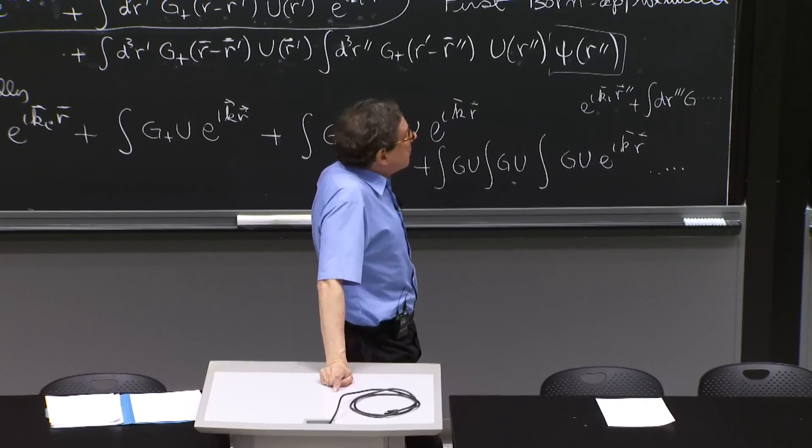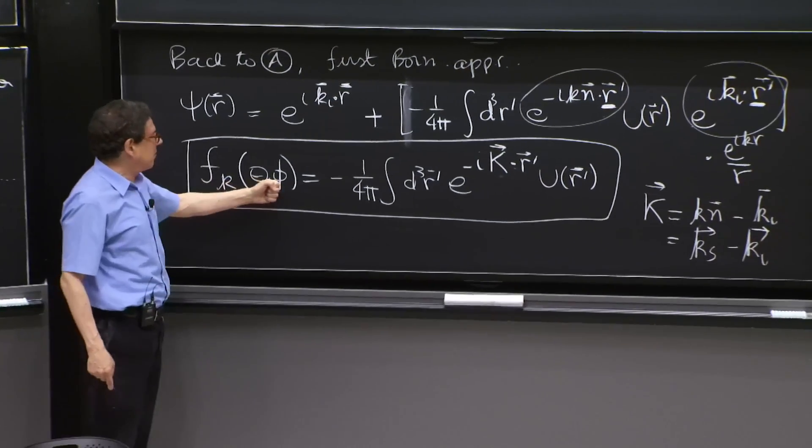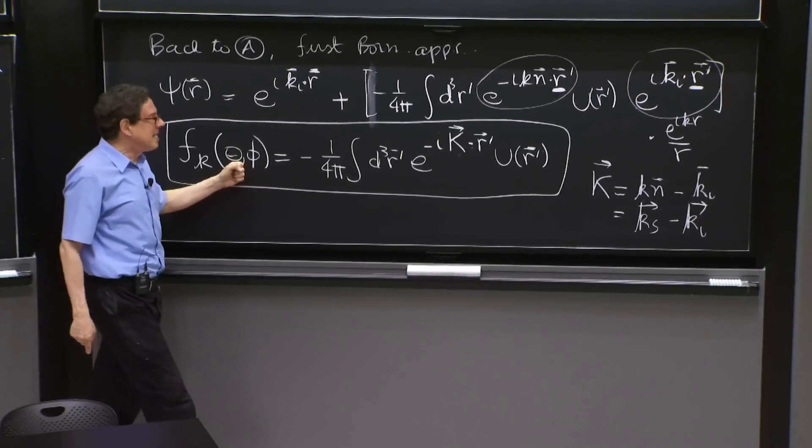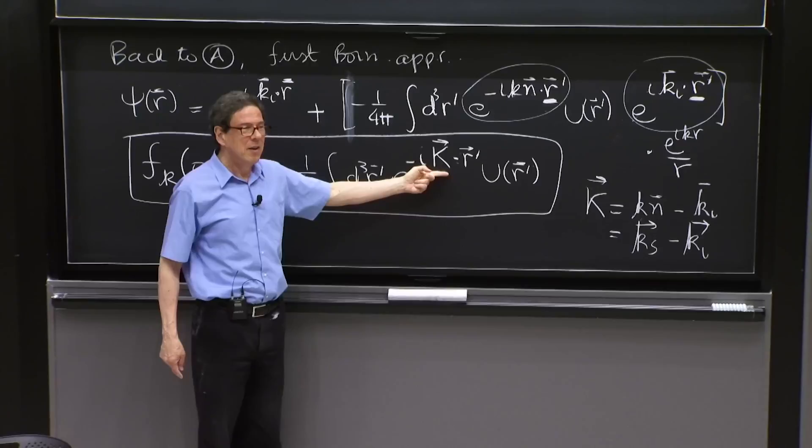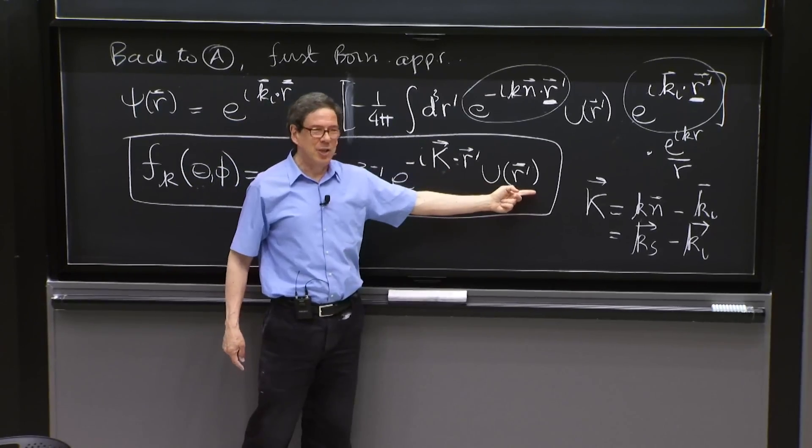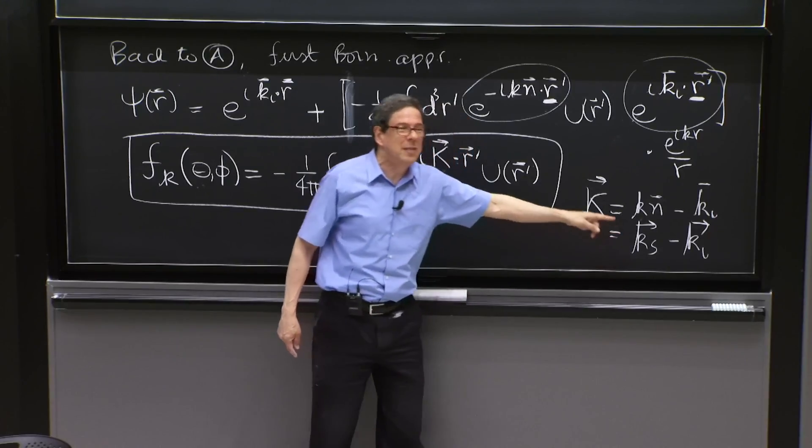Here, it says that fk, the scattering amplitude, as a function of theta and phi, is nothing else than a Fourier transform of the potential evaluated at what we would call the transfer momentum.